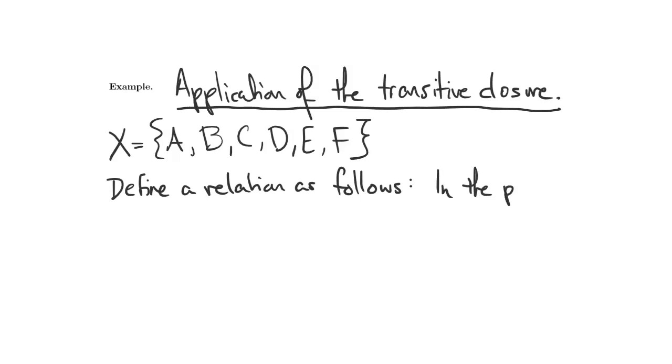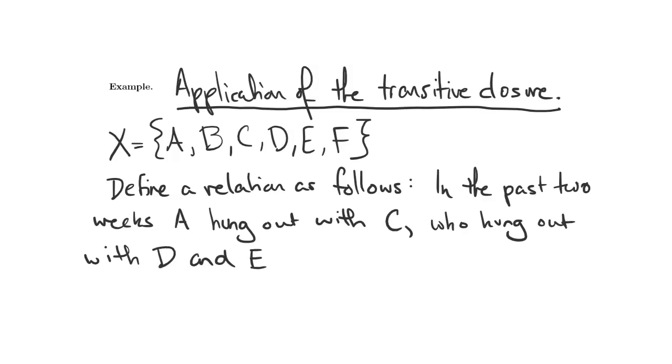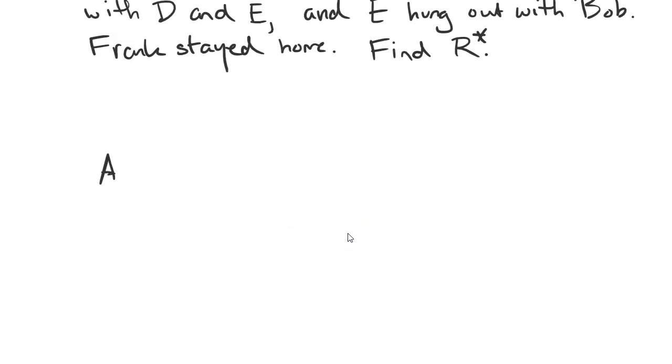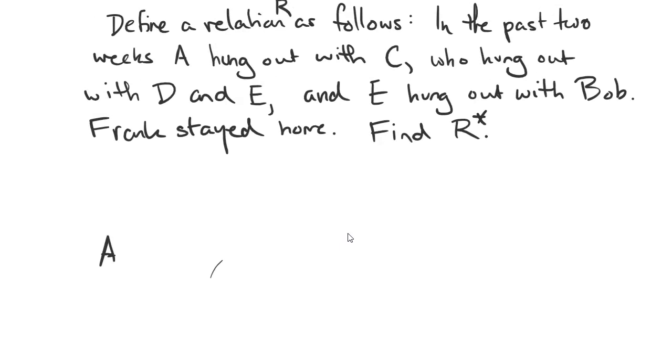And define a relation as follows. In the past two weeks, Alice hung out with Carlos, who hung out with Derek and Erica, and Erica hung out with Bob. Frank stayed home. Let's call this relation R, and we want to find R star. We have Alice, we have Carlos, we have Derek and Erica, we have Bob, and then we have Frank.